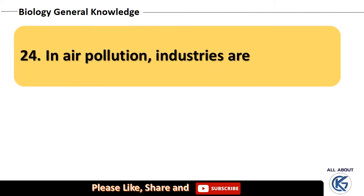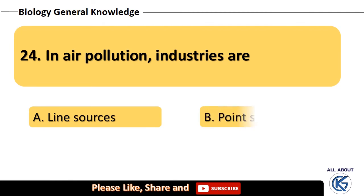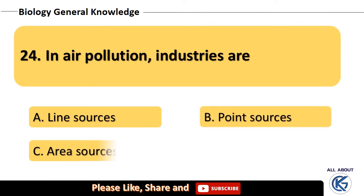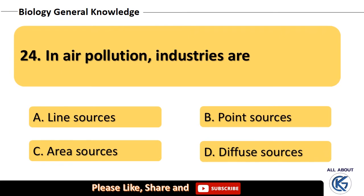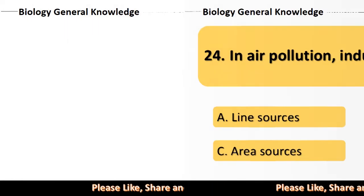In air pollution, industries are — line sources, point sources, area sources, or diffuse sources? The right answer is point sources.